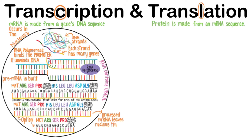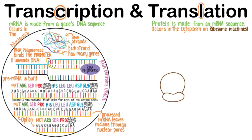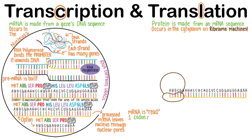I'll use this processed mRNA as our example. It leaves the nucleus through nuclear pores. Then the translation of this mRNA transcript into protein occurs in the cytoplasm on ribosome machines. The ribosome has two pieces, or subunits, and the mRNA transcript fits in between these pieces. mRNA is read one codon at a time. Once the ribosome reads the codon, it is matched to the correct tRNA, or transfer RNA, anticodon.